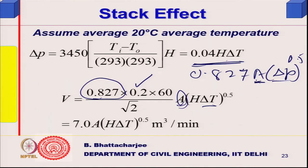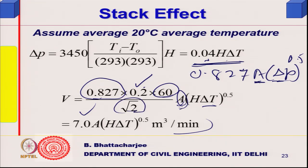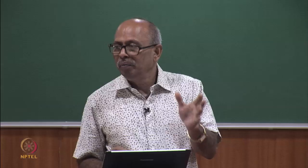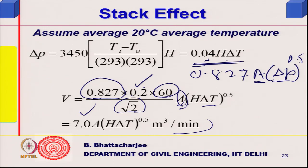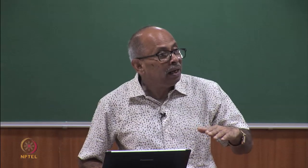Taking the equivalent area and multiplying by 60 to convert to m³/minute, the flow formula comes out to approximately 7.0 times A times the square root of (H times delta T) m³/min, where A is the equivalent area of inlet equals outlet, H is height between openings, and delta T is inside-outside temperature difference. This formula is found in SP 41.